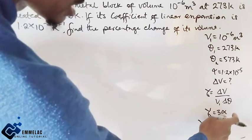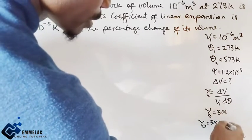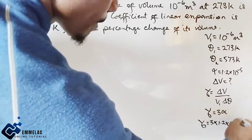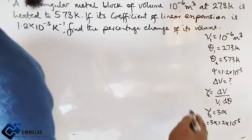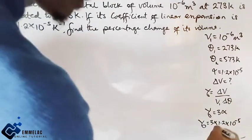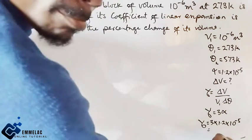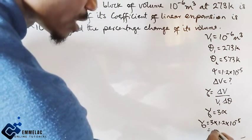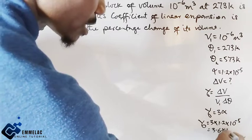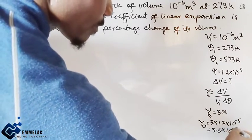Implementing this, we have three times the linear expansivity: γ = 3 × 1.2×10^-5, which gives us 3.6×10^-5 per Kelvin.